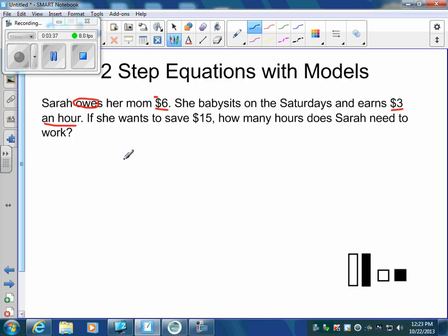So that's our variable. We have $3 each hour. So that has to be my letter. Then we read that she owes $6. Minus 6.